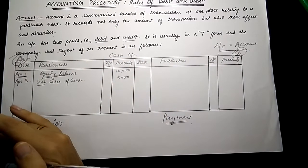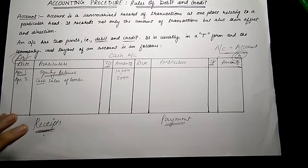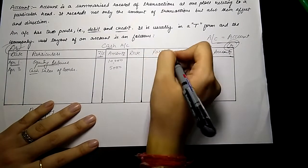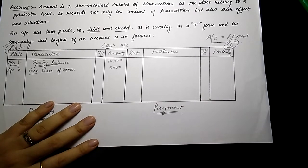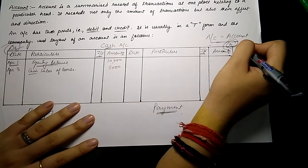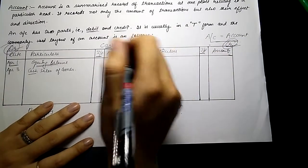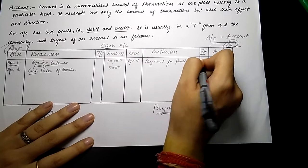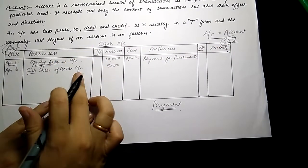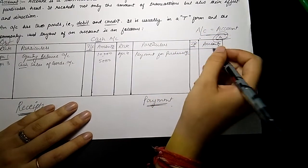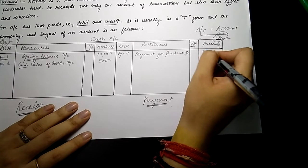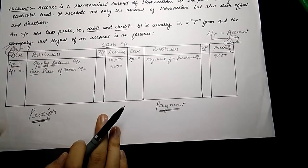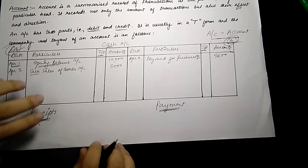Now suppose we have purchased something — we will pay that person with cash, and that is our payment. So that payment will be written on the credit side of the account. Suppose on April 4th we did purchases — suppose the amount is 5,600. So this was the payment and this was the receipt. Now we have to balance our account.